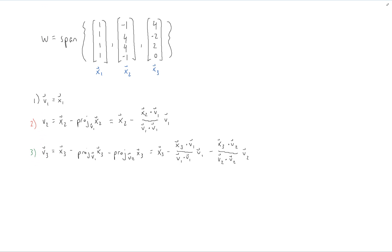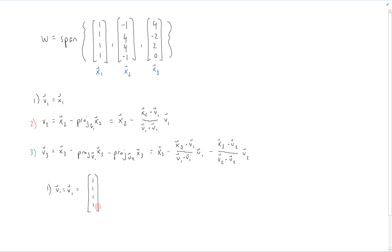Let's start with v1. Once again, v1 is just our starting point — it's the same thing as x1. Writing it out as an actual vector, v1 = (1, 1, 1, 1).